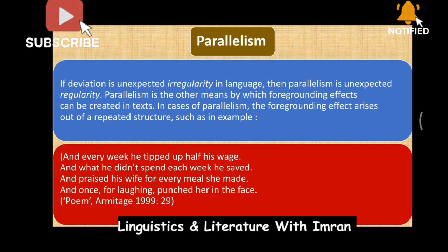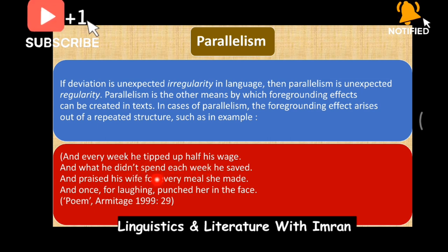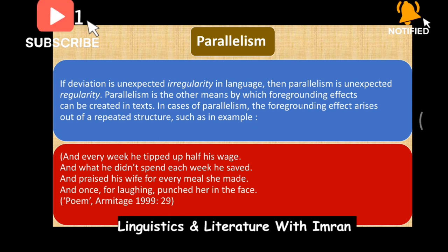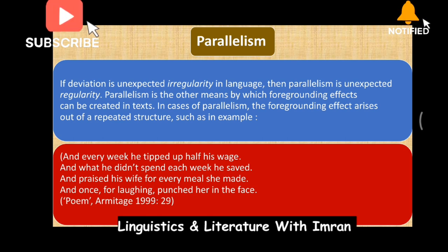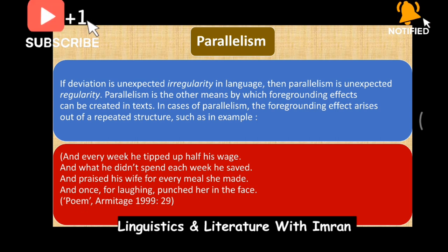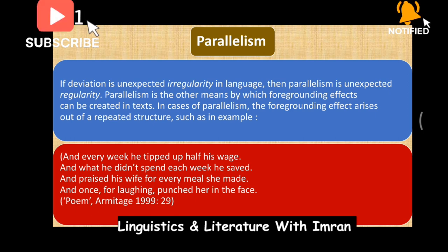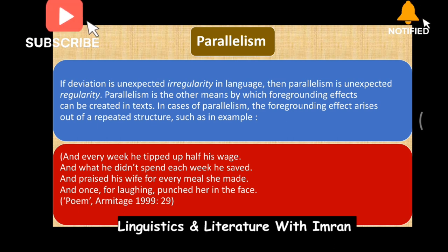We have a syntactic parallel structure, and at the semantic level we see that the first three lines present positive ideas while the fourth line presents a negative idea — this is semantic deviation within the parallelism. So the first three lines have parallel structure with semantic parallelism showing positive content, and the last line deviates with a negative idea inserted. Within parallelism, there can also be deviation.